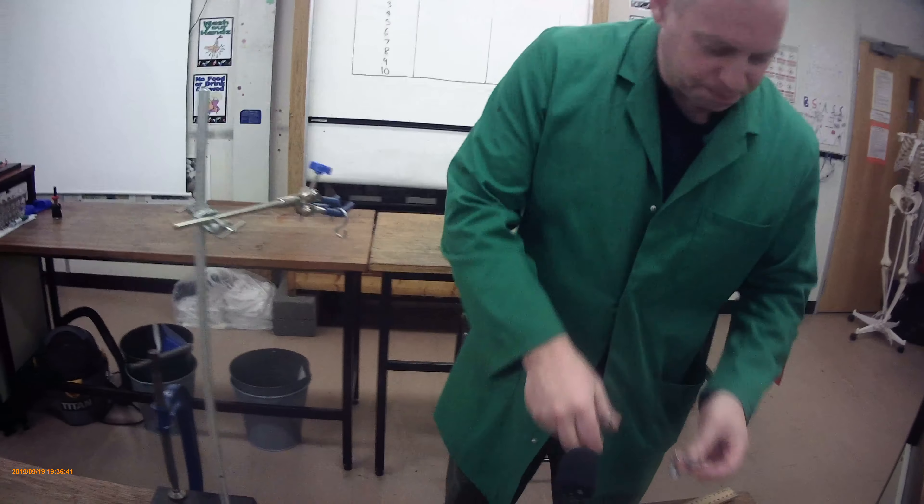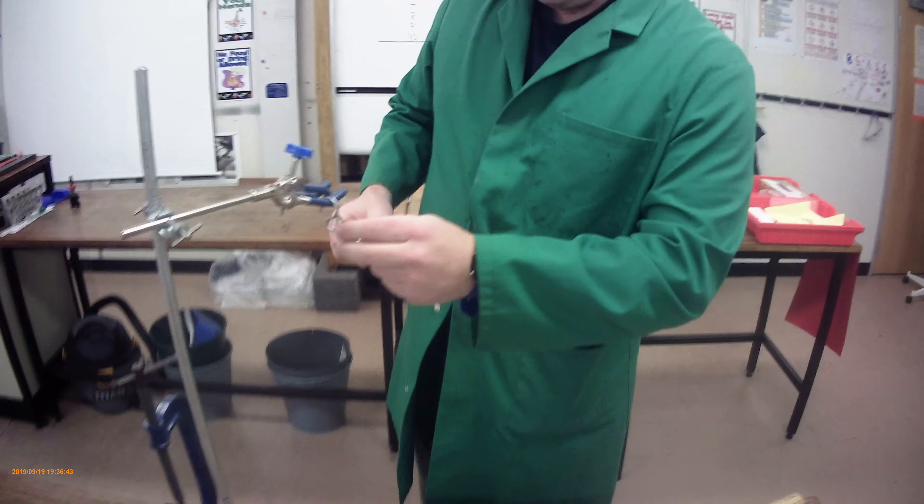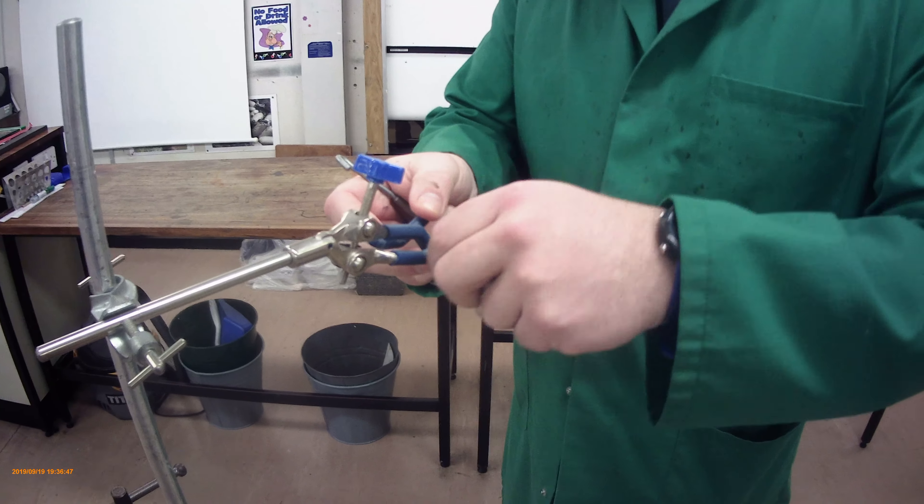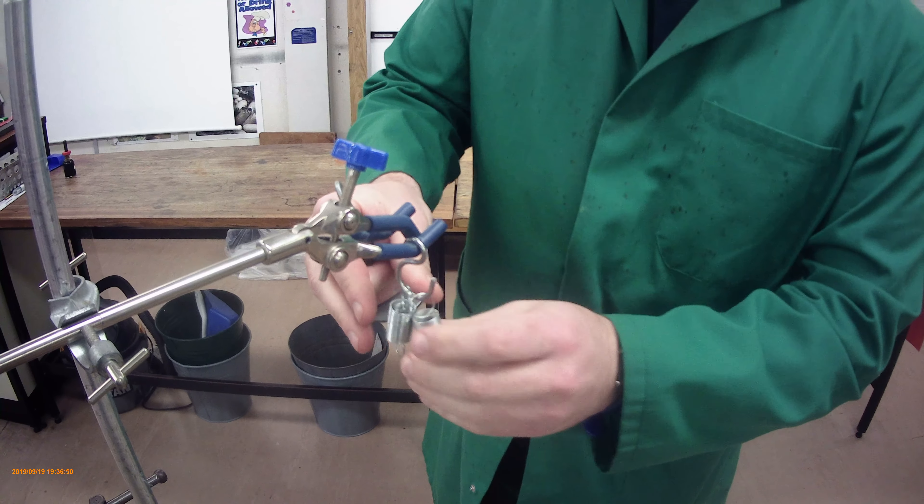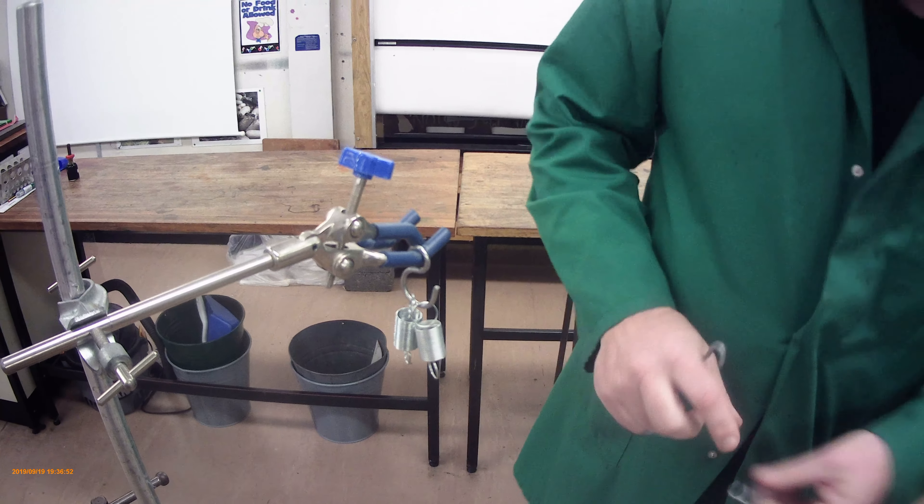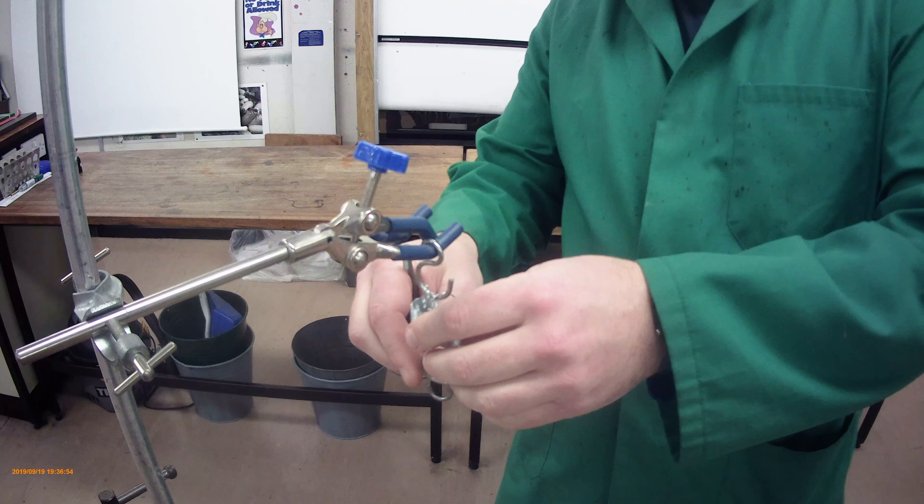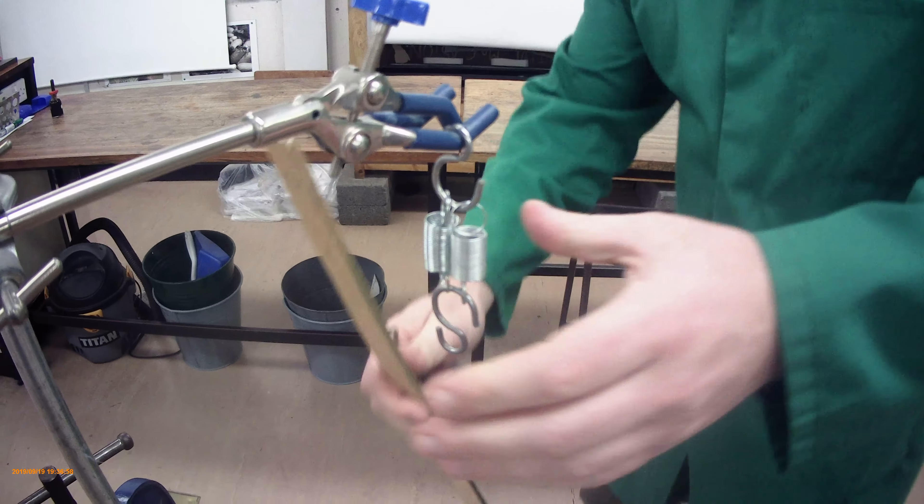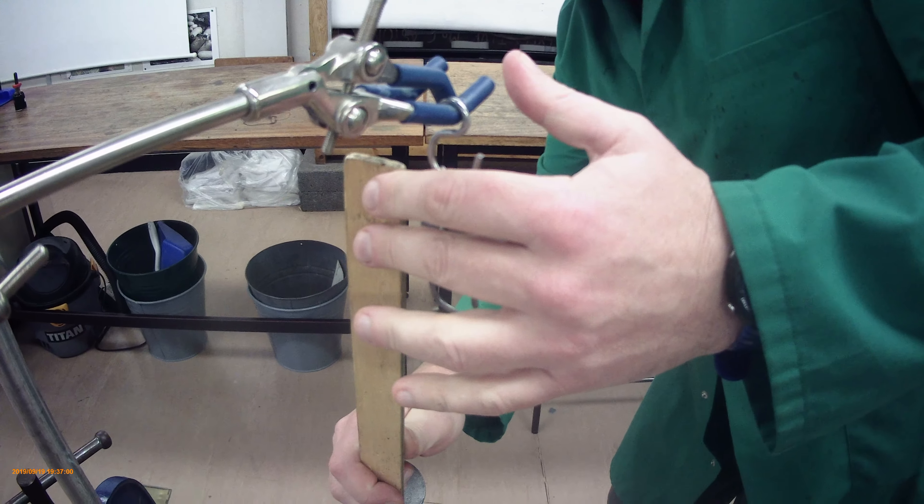Springs in parallel are where I'm going to put two springs side by side. Put another spring down. There we go. So again, we'll start off with this and the length of the spring, five centimeters.